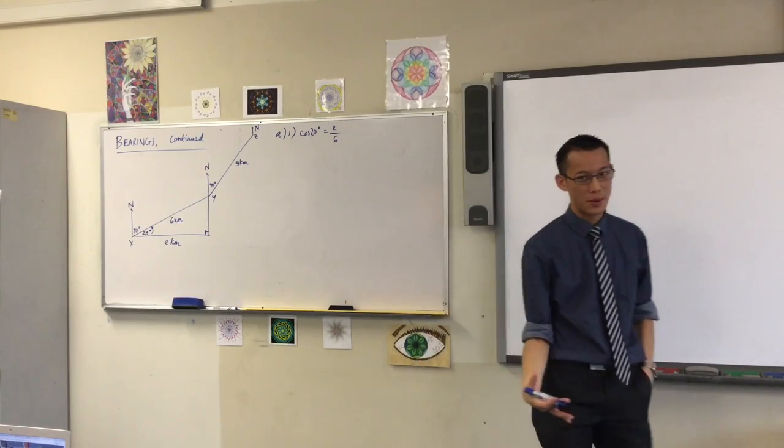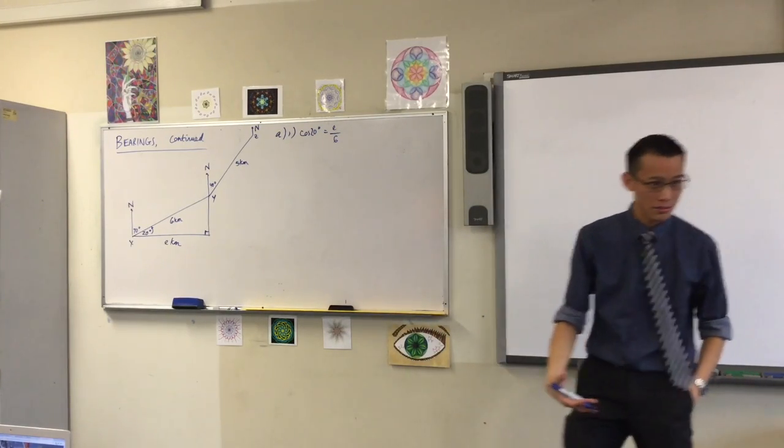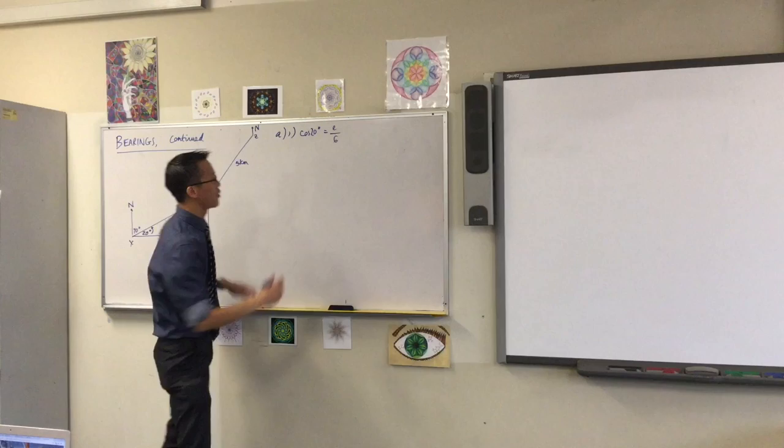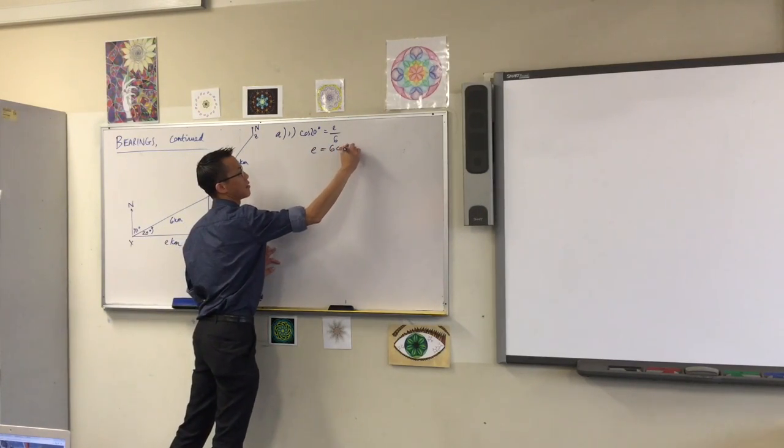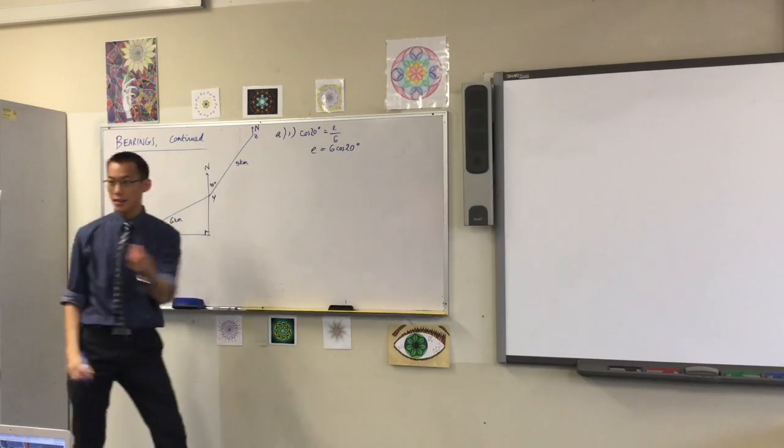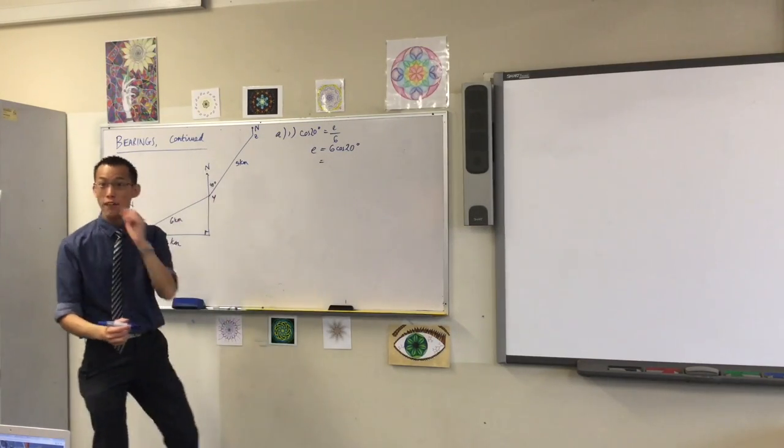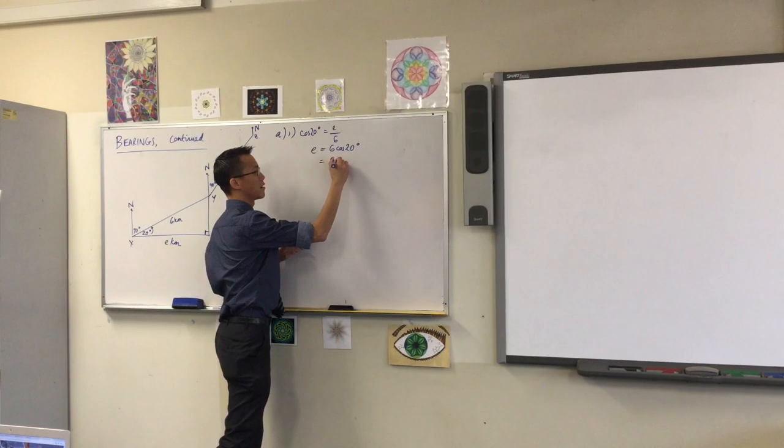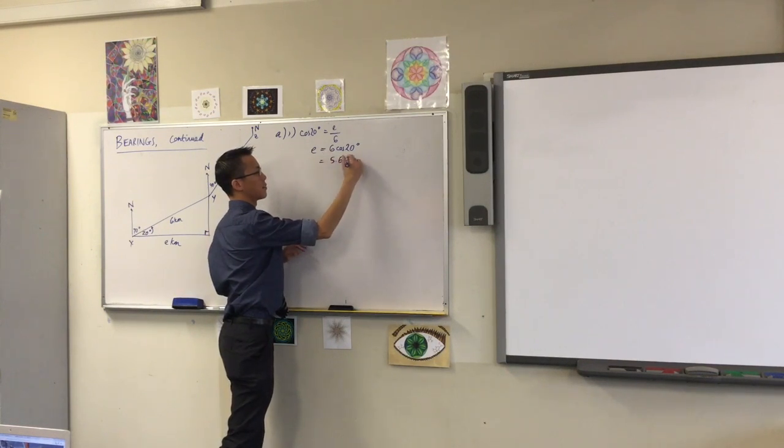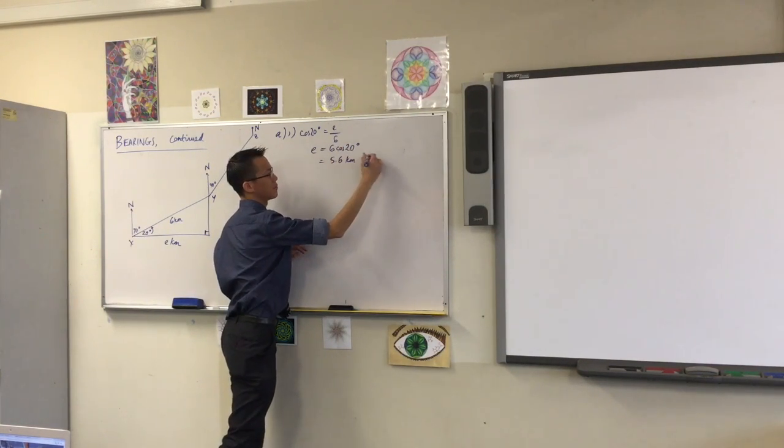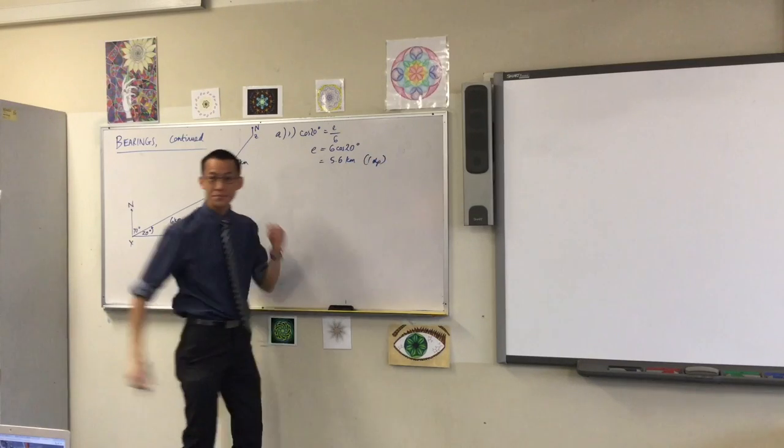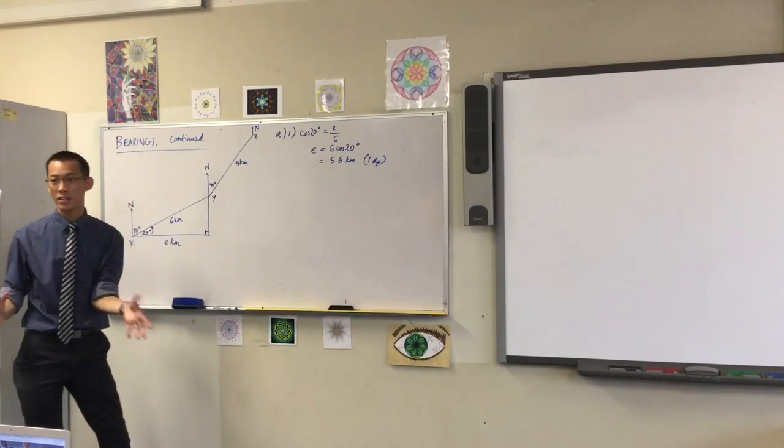I can say cos 20 degrees is equal to adjacent on hypotenuse. Okay. I'm trying to find what E is by itself. So what have I got to do? Multiply both by 6. So that gives me this. And then this should give us a number, right? So does someone want to provide 5.6? Actually, yeah. Okay. Are we happy with that? Surrounding look good? Yeah.